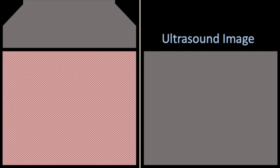How does this happen? Let's take a look at the image on the left. An ultrasound probe is placed over the soft tissue structures. Let's place a fluid collection within that. How does that appear by ultrasound?